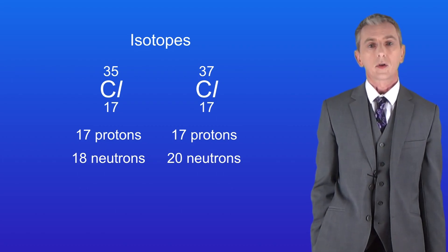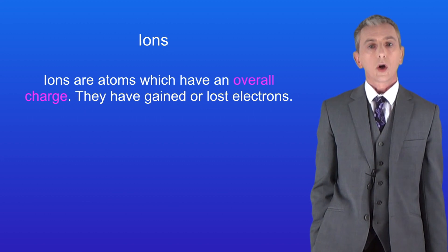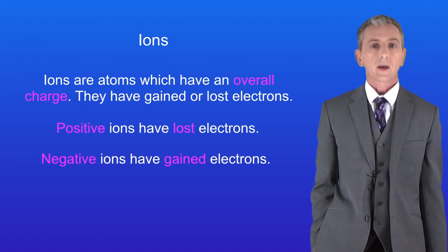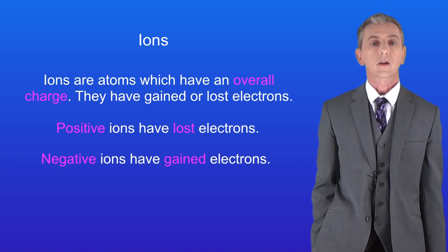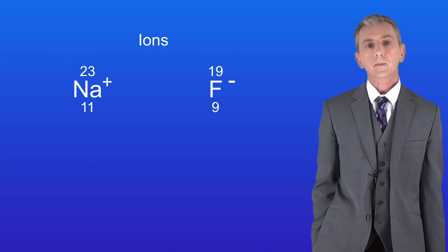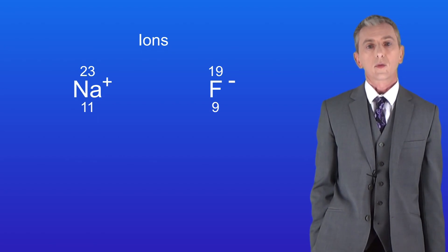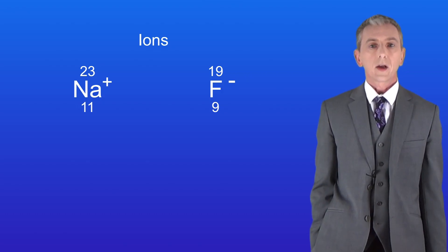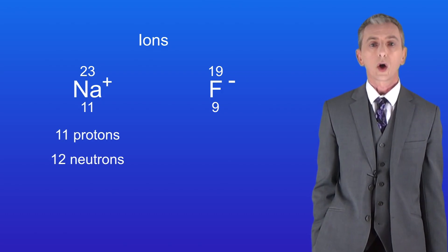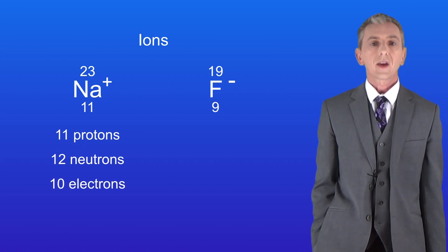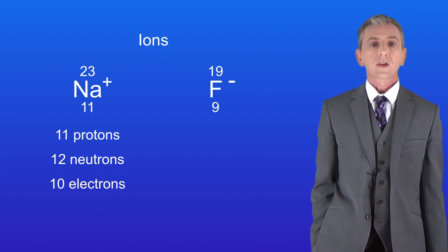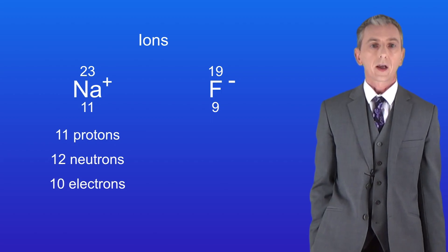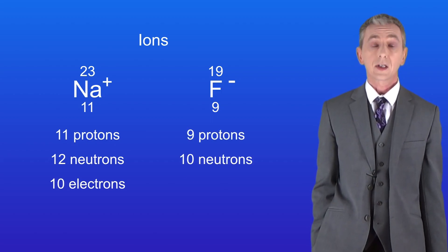Let's finish off now by looking at ions. Ions are atoms which have got an overall charge because they've gained or lost electrons. Positive ions have lost electrons whereas negative ions have gained electrons. The example on the left shows sodium ions with a single positive charge, which means that the atoms of sodium must have lost one electron. So these ions have 11 protons, 12 neutrons but only 10 electrons. The example on the right shows a fluoride ion with a single negative charge, so the fluorine atom must have gained an electron. So these ions have 9 protons, 10 neutrons and 10 electrons.